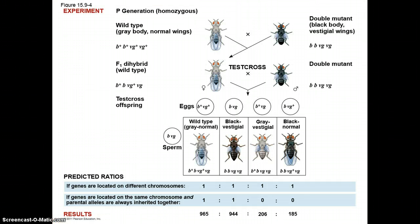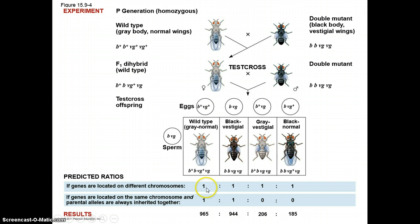He crossed flies with different traits in both body color and wing size — wild-type flies with gray bodies and normal wings crossed with double mutants, which were black-bodied flies with vestigial wings. The vestigial wings are smaller and stumpy where the normal wings are longer. In the F1, he found a dihybrid that was all wild type. In the F2 test cross, if the genes are located on different chromosomes, they were found in a 1 to 1 to 1 to 1 ratio, but if they're on the same chromosome with parental alleles always inherited together, you saw a much different outcome.